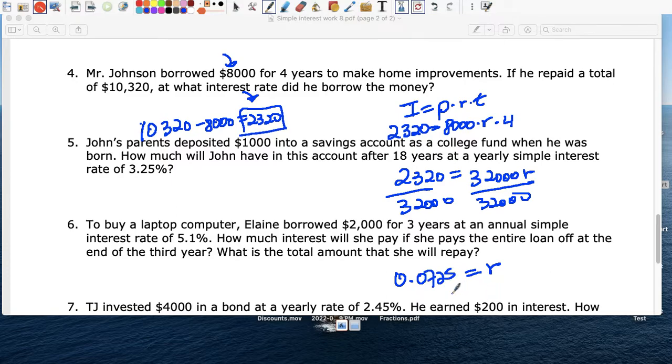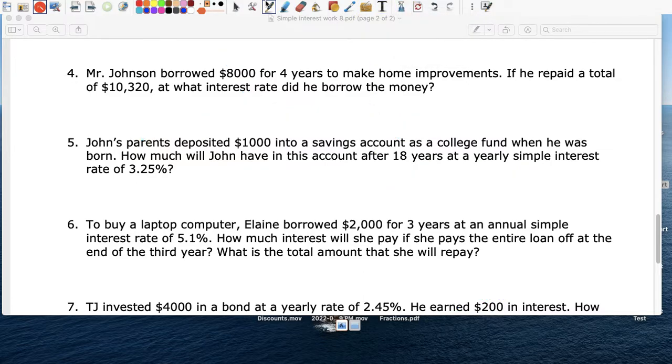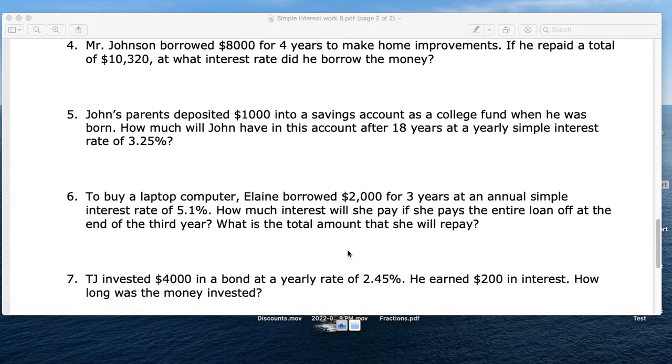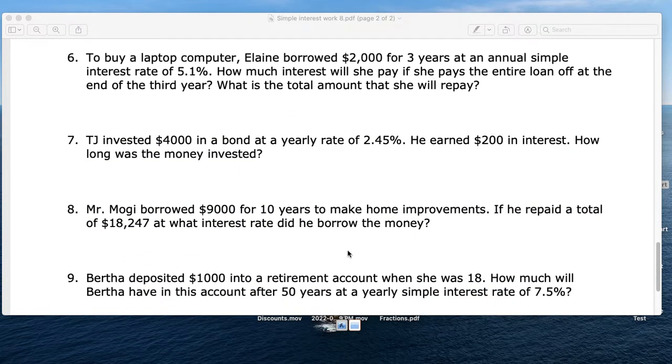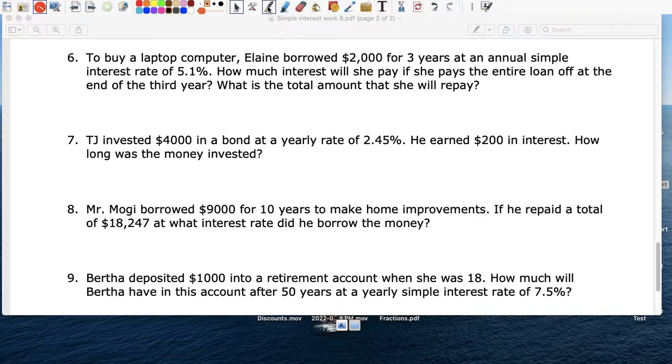Or if you change that to a percent, it becomes 7.25%. That's how much they charge. Remember, like I told you, this is just an exercise using your calculator. You have four variables. Three of them you'll always know. You'll solve for the missing one or the unknown.